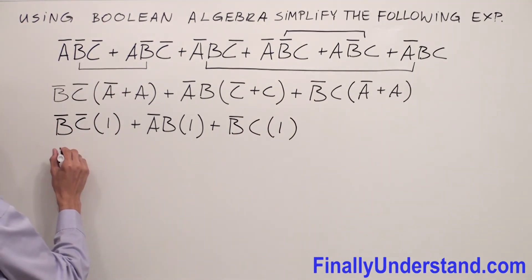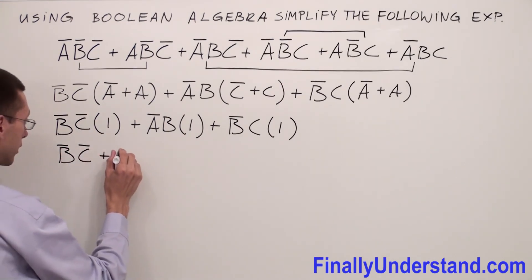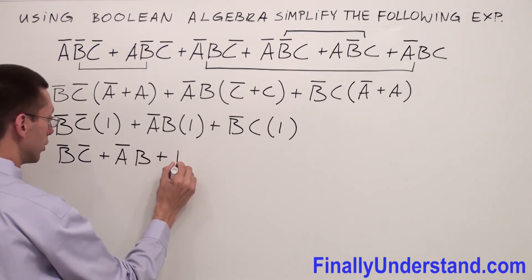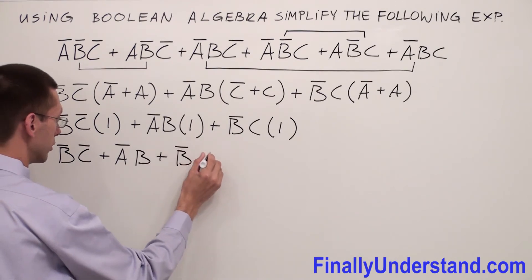So my equation is going to look like this right now. My expression is B̄C̄ times one which is just B̄C̄, or ĀB̄, or B̄C̄.